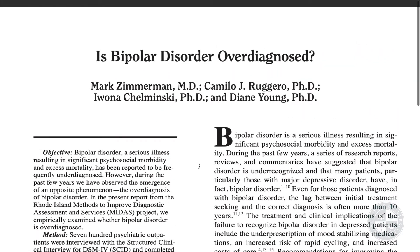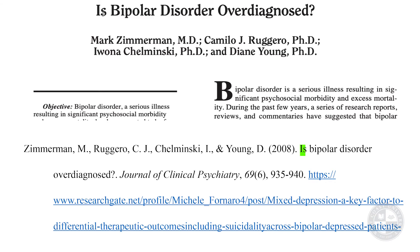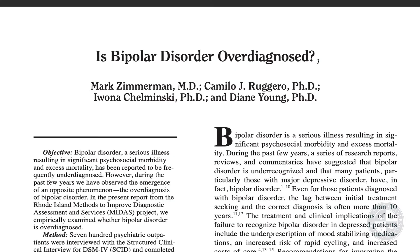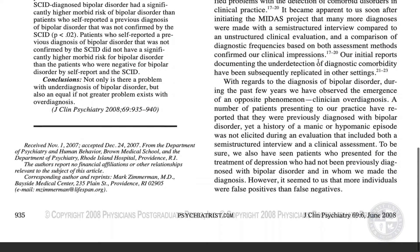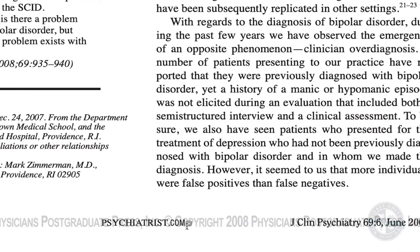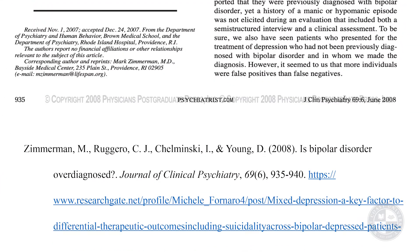Next is the title of the article: Is bipolar disorder overdiagnosed? Remember, you're only capitalizing the first word, so the rest will be lowercase. Use the question mark as it appears — it's part of the title. If it didn't have a question mark, you would put a period there. Next is the name of the journal. Scrolling down, it's listed as J. Clin Psychiatry, which stands for Journal of Clinical Psychiatry. You write it out capitalized — Journal of Clinical Psychiatry — and it needs to be in italics.